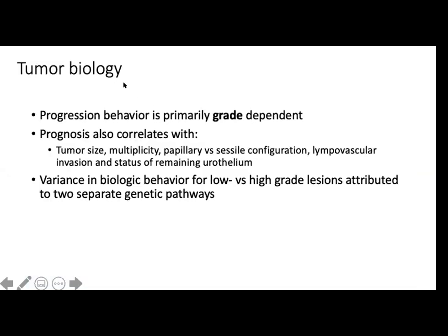For tumor biology, progression behavior is primarily grade-dependent. Prognosis also correlates with tumor size, multiplicity, papillary versus sessile configuration, lymphovascular invasion, and the status of the epithelium. For low-grade, recurrence is 50 to 70% and progression is 5%. For high-grade T1 lesions, recurrence is 80% and progression is 50%. For low-grade, it's chromosome 9; for high-grade, it's chromosomes 7, 9, and 12, associated with aggressive tumors.